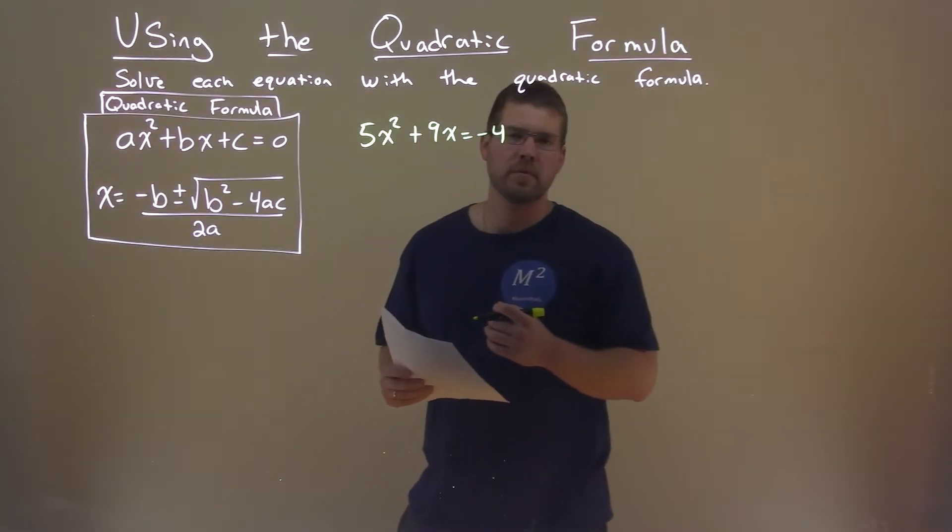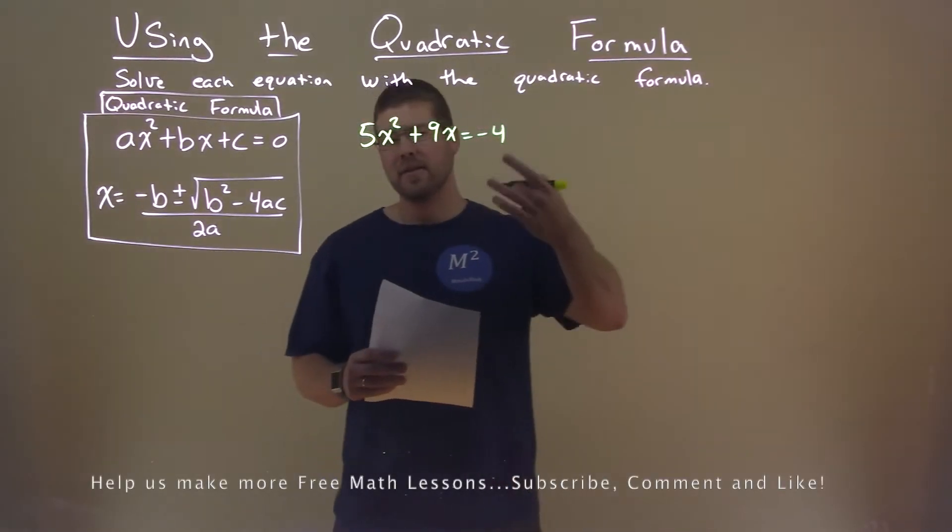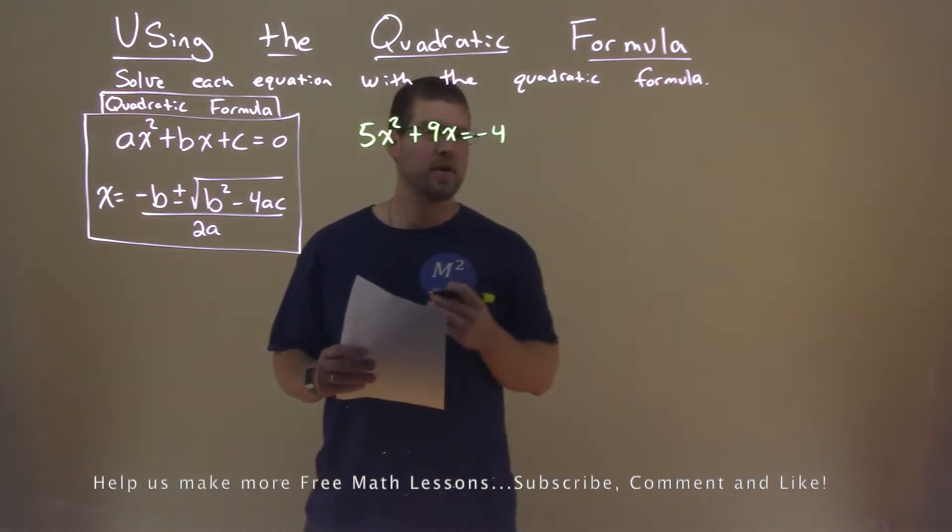We're given this problem right here: 5x squared plus 9x equals negative 4, and we want to solve using the quadratic formula.